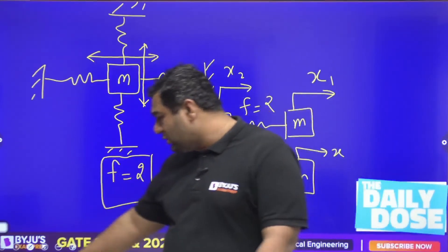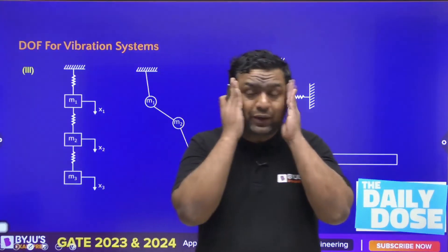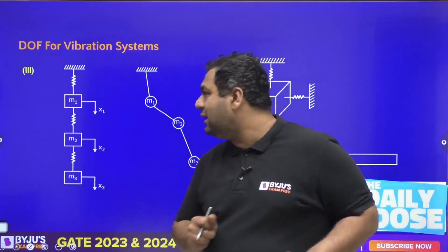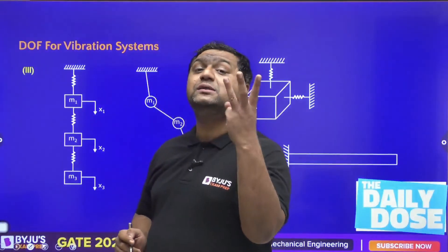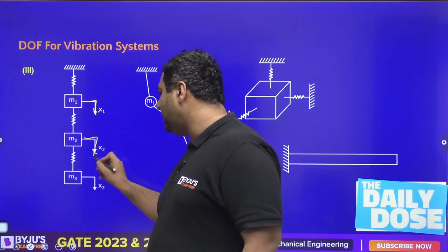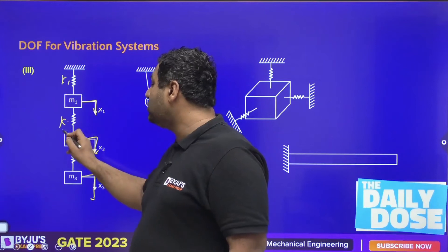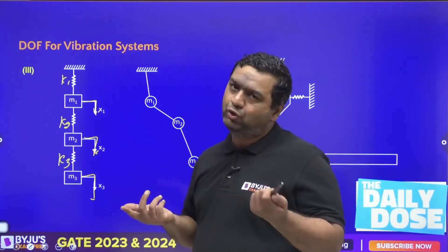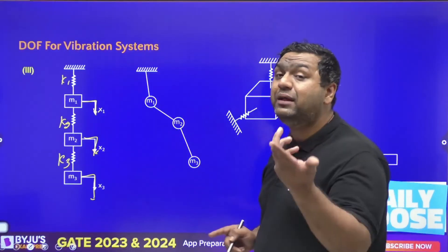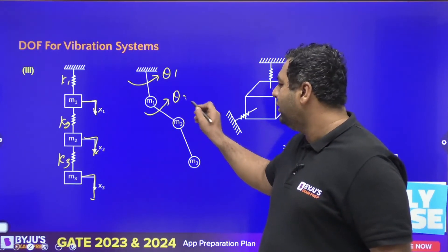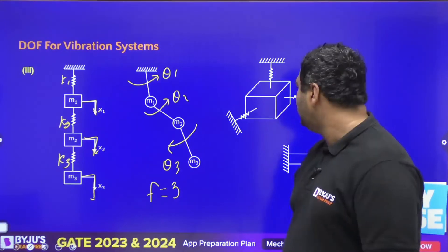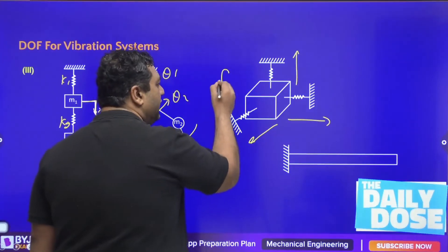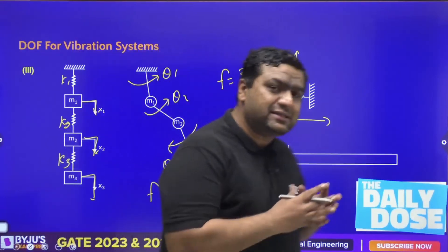There is no formula to apply here — you must think it through. First, see the number of bodies. Then determine their possible motions. Then check whether those motions are dependent or independent. For three masses connected by springs, there are three bodies with three independent translation motions x1, x2, x3, giving degree of freedom three. Similarly, three disks on shafts rotating by theta one, theta two, theta three also gives DOF of three. A body that can translate in x, y, and z directions also has DOF of three.